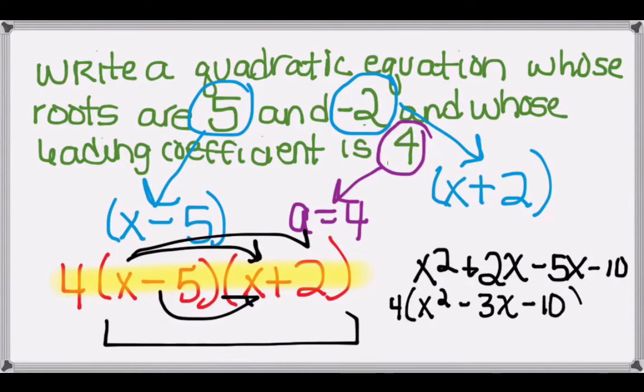And the last step is to multiply the 4, which gives us 4x² minus 12x minus 40.